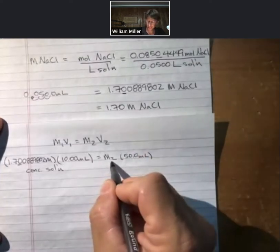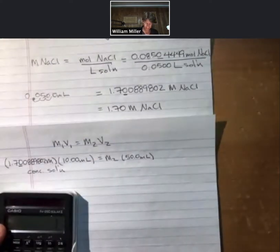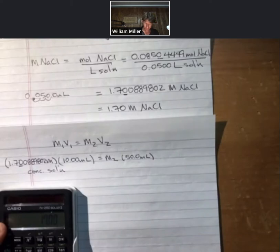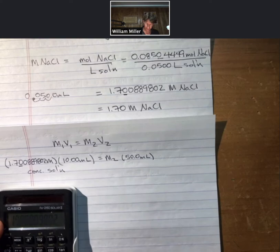One unknown, rearranged to solve. I'm going to take my 1.700889802, multiply it times 10, divide it by 50.